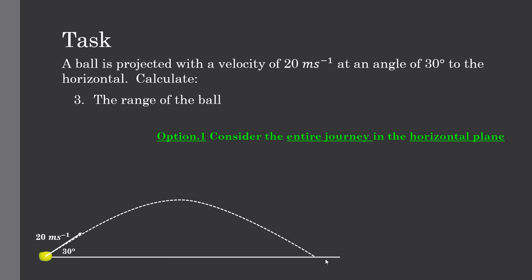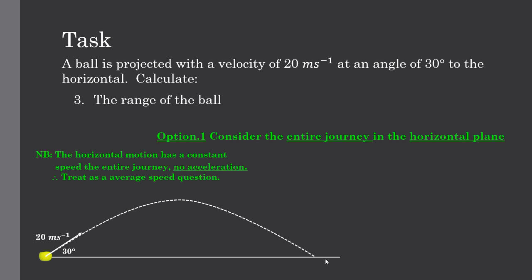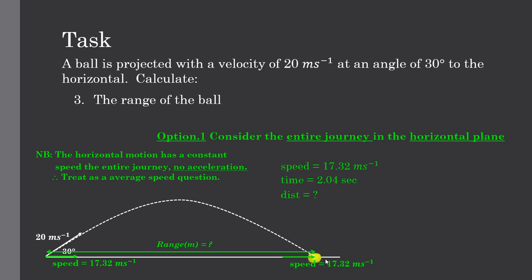The third and final question is to calculate the range of the ball. Option one: consider the entire journey in the horizontal plane. In horizontal motion there is no net force and no acceleration — the ball travels at a constant speed of 17.32m per second for the entire duration. Using distance = speed × time, with 17.32m per second and the previously calculated time of 2.04 seconds, we get a range of 35.3m.